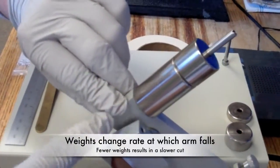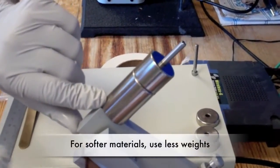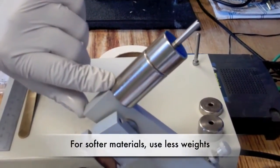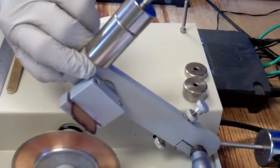The samples are weighted down with these weights. These weights dictate the speed at which the arm falls or the speed at which the cut is made. Fewer weights used results in a slower cut. Soft materials should use fewer weights to create a uniform cut.